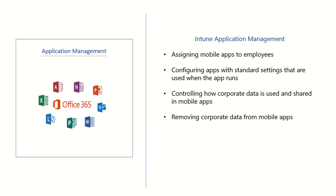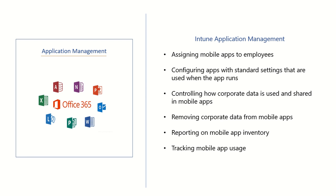The specific term used for removing only corporate data is called selective wipe. There is a full wipe — where everything is gone — and a selective wipe, where only the corporate information is removed. Since it's a cloud service, you will also have reporting for application management. You can narrow down which application has been provisioned for which user on which device. For all three entities — device, application, and user — you can create custom reports with the Power BI desktop app, and you'll get ample information on the portal itself. Intune app management will also help you track mobile app usage.